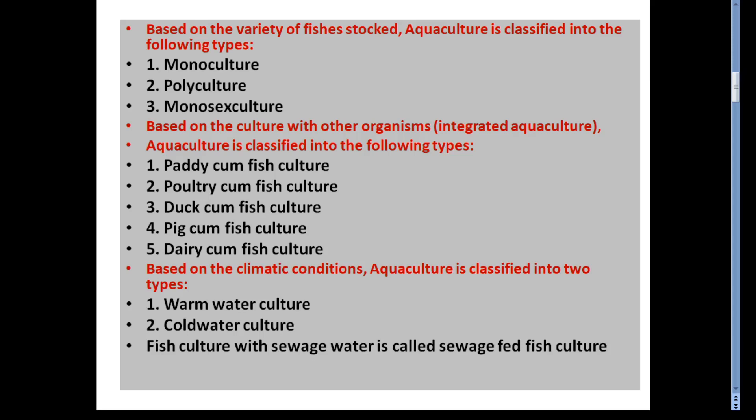Monoculture means culturing only a single species in a pond. Polyculture means culturing many types of fish in the same pond or tank — for example, major carps, minor carps, and exotic carps together. Monosex culture means culturing only one sex — either only males or only females.